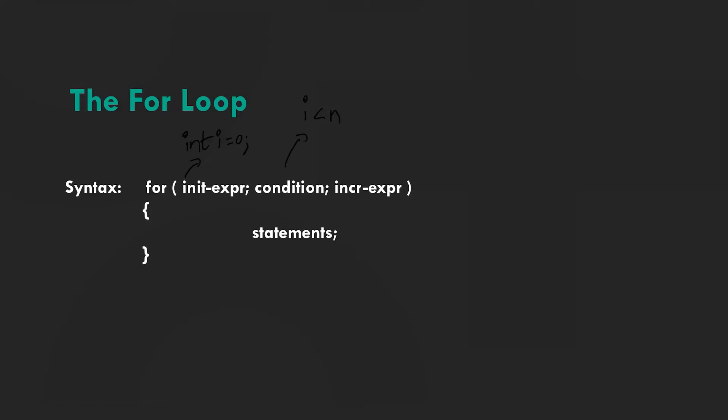After the block of code executes once, the increment expression statement is run. This either increments or decrements the loop control variable. The loop basically runs continuously till the condition fails and then exits the loop.